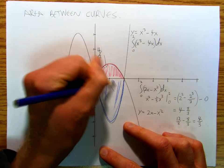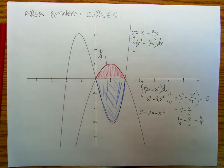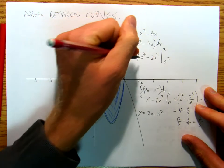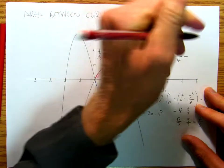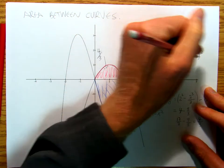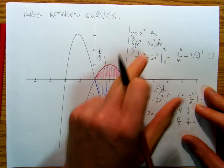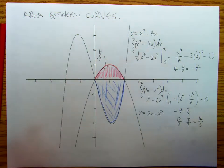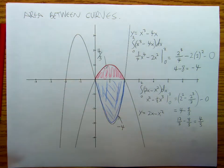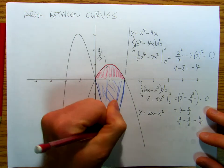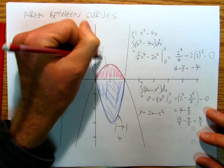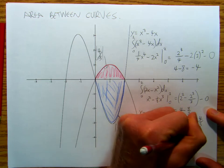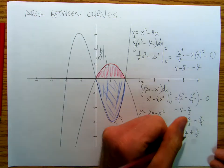I'm going to find this area here for the second function. I get one fourth x to the fourth minus two x squared, evaluated at two and zero. I've got two to the fourth divided by four minus two times two squared, minus zero. That's going to be four minus eight, so I'm going to get minus four. So this area is minus four, but I want to take absolute value, so this is four. Total area is equal to four plus four thirds, which is sixteen thirds.